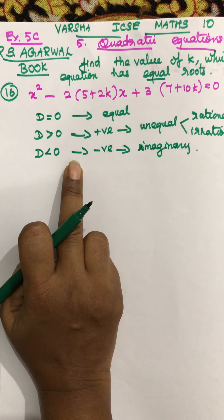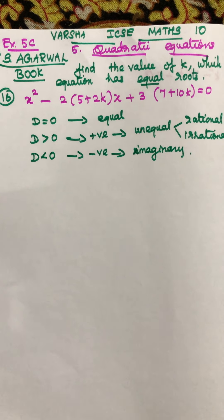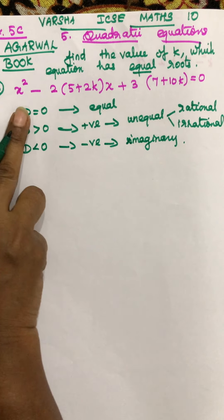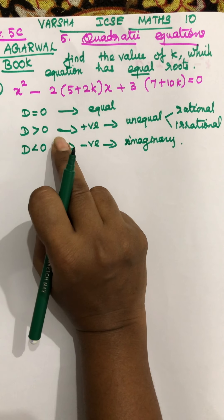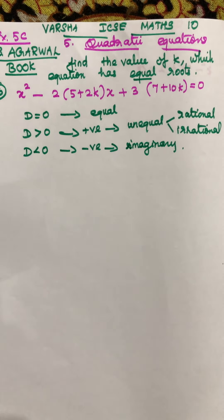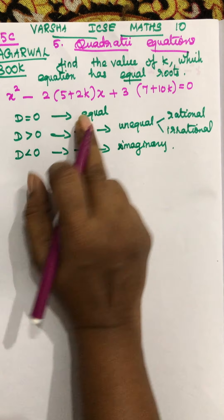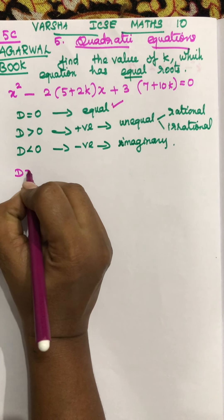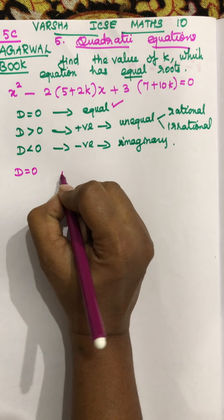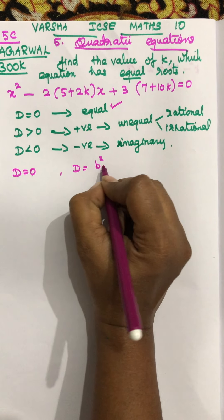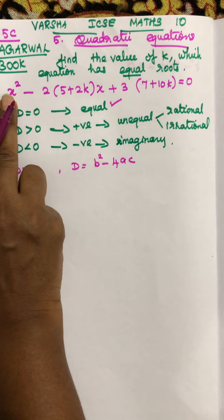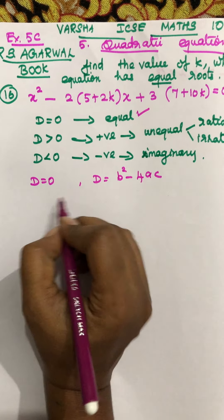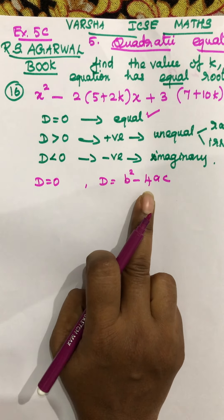Keep these 3 conditions in mind so you can do this type of sum easily. For this question, since equal roots are given, you select the condition D = 0. So D = b² − 4ac. For this question, D equal to 0, and now you find b² − 4ac.